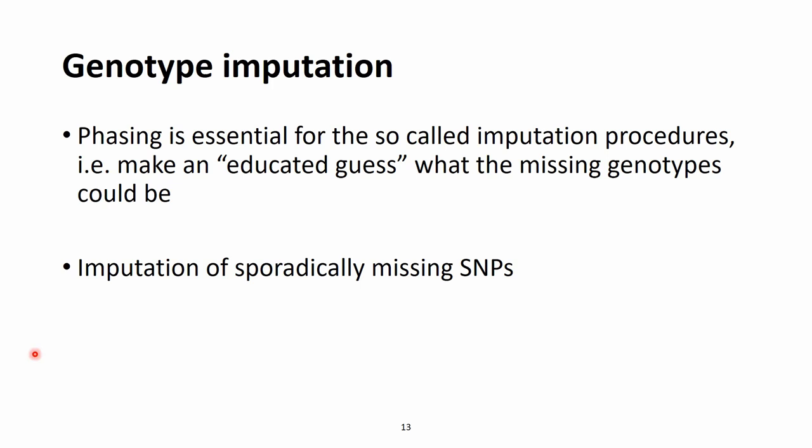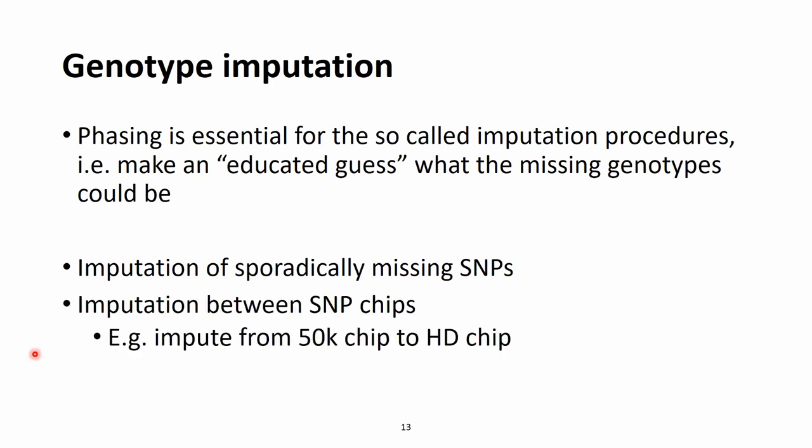There are two major ways how we can use this method. The first is the imputation of sporadically missing SNPs and the other is imputation between SNP chips — for example, we can extend a lower density SNP chip, such as a 50k SNP chip, to a higher density. For both of these approaches I will give examples in the following slides.